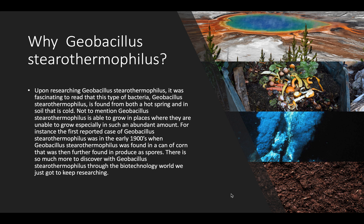Geobacillus stearothermophilus also has a growth rate similar to that of Escherichia coli. It was first found in the early 1900s in a can of corn, which was further traced back to the stock of the corn as a spore. Today, Geobacillus stearothermophilus is being further researched in the world of biotechnology.